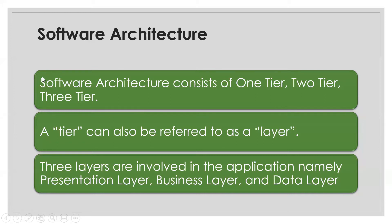What is software architecture? Software architecture consists of one-tier, two-tier, and three-tier. A tier can be referred to as a layer. Three layers are involved in any application: the presentation layer, business layer, and data layer. These are the three layers which are always involved in any software.